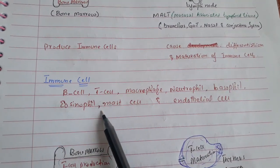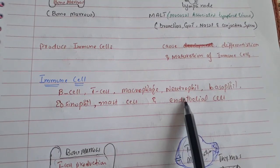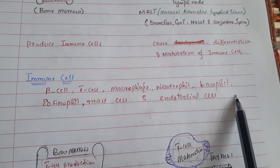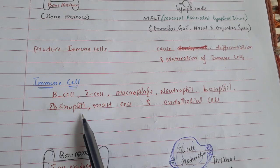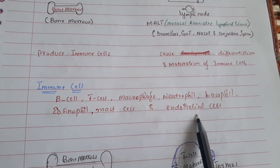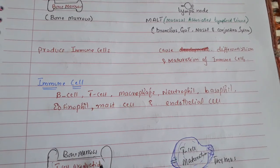The immune cells are B cells, T cells, macrophages, neutrophils, basophils, eosinophils, mast cells, and endothelial cells.